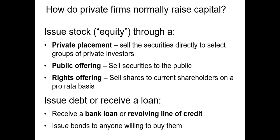Now let's talk about how firms raise capital in the primary market. There are several securities private firms can issue to raise capital. The first is via a private placement, which involves the firm issuing shares of stock directly to individuals or institutional investors — the firm can be selective about who it issues shares and bonds to. The next option is a public offering. If this is the first time the firm has issued shares to the public, it's known as an initial public offering or IPO. If the firm's shares are already trading on a public stock exchange, this would be a secondary equity offering or SEO.